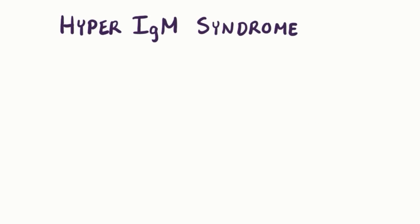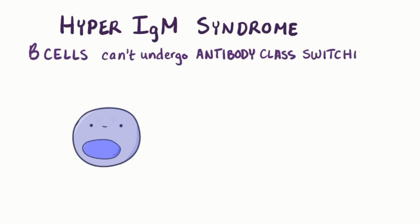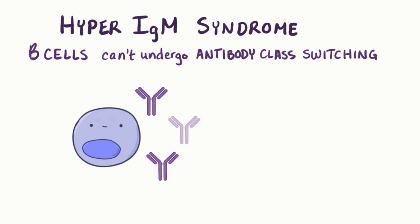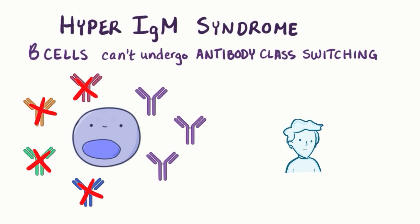Hyper-IgM syndrome is a problem where B cells are unable to undergo antibody class switching, meaning that they can produce IgM antibodies, or immunoglobulins, but struggle to produce other types of antibodies, and that leaves individuals at risk for certain infections.